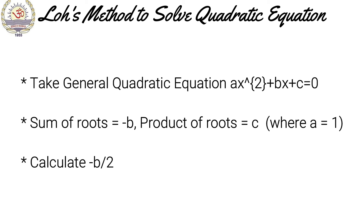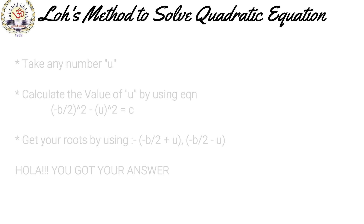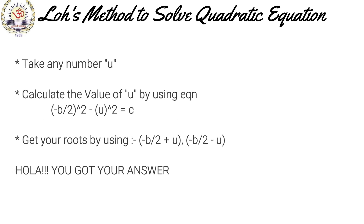After that, calculate minus b divided by 2. After calculating minus b divided by 2, take any number u. This u will be used in the equation. Now, calculate the value of u in the equation: minus b divided by 2, whole squared, minus u whole squared, equal to c.